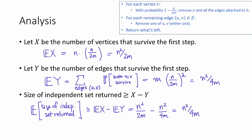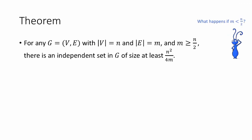In particular, since the expected size of the independent set returned is at least n²/(4m), there must exist an independent set that is that large. This proves the theorem: for any graph G with n vertices and m edges, there is an independent set in G of size at least n²/(4m). In particular, as we saw before, if m is not too big, then this lower bound on the size of the independent set is going to be pretty large.